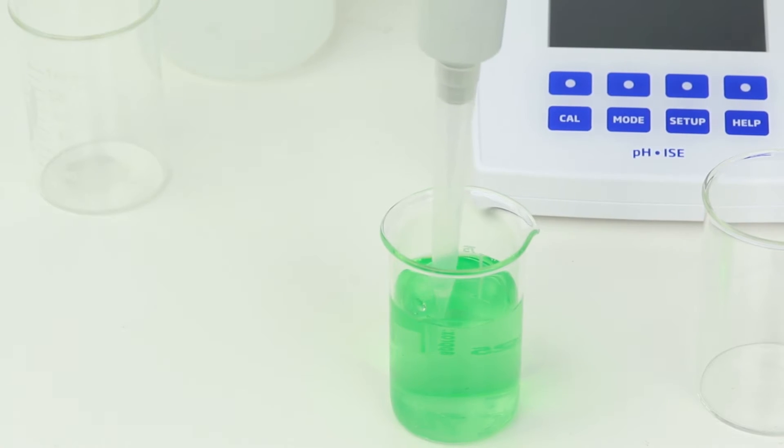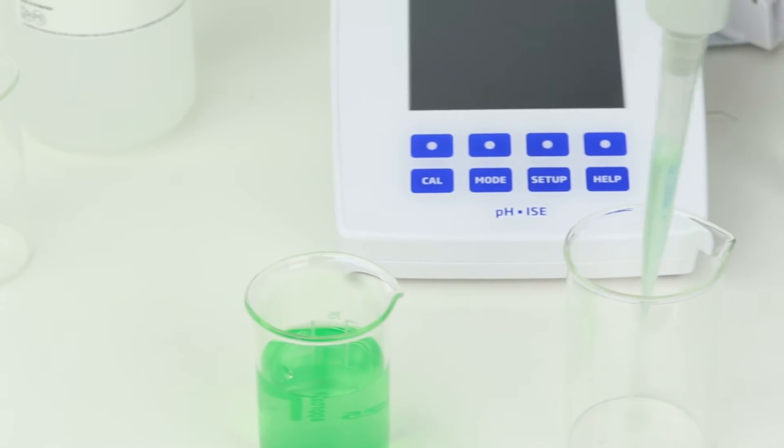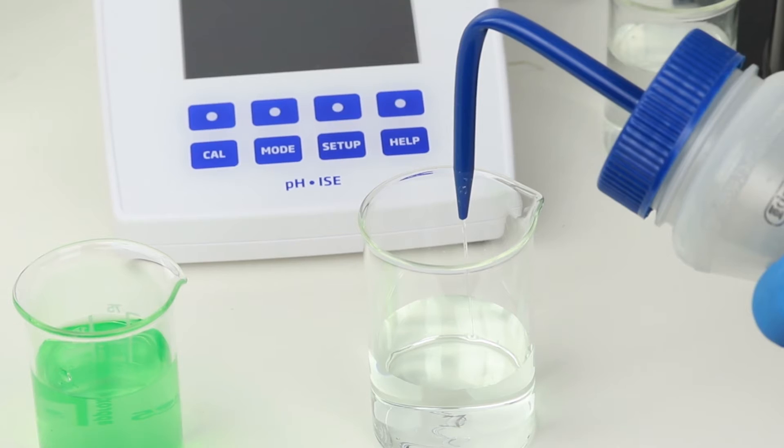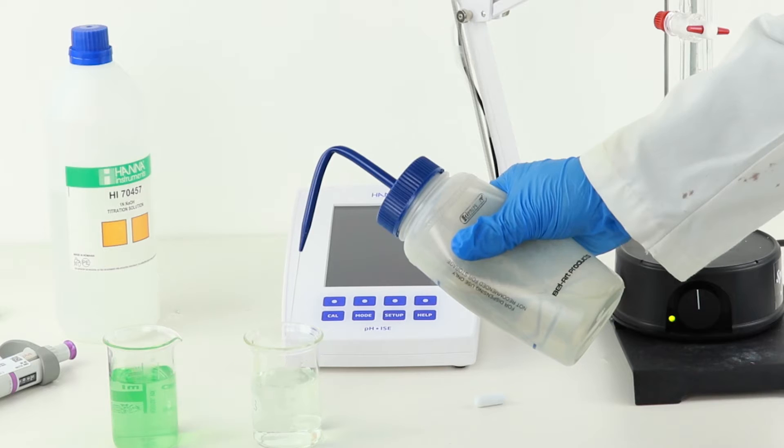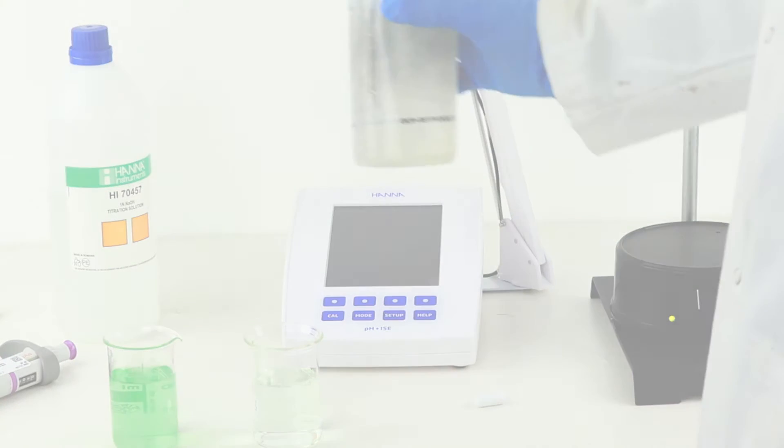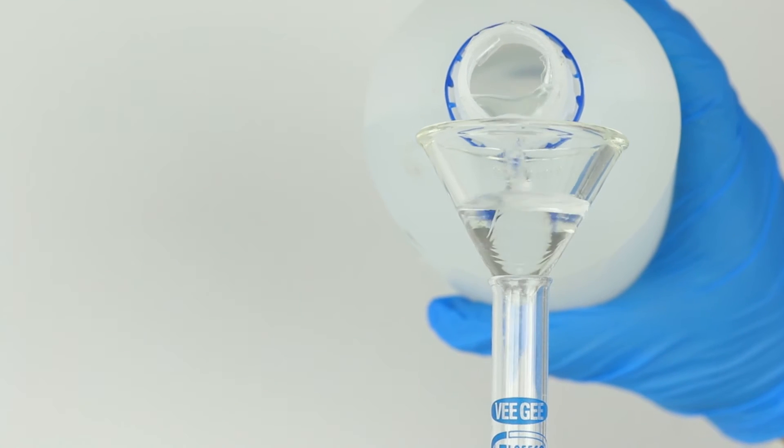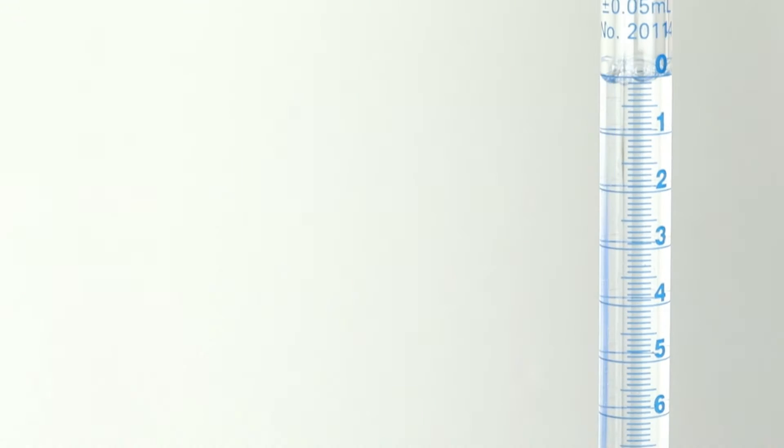To perform an acidity titration, prepare your sample by volumetrically measuring it out and adding deionized water to submerge the electrode. Distilled or RO water works as well. Next, we'll fill a burette with our titrant of one normal sodium hydroxide. Be sure to record the starting milliliter value on your burette by looking at the meniscus.